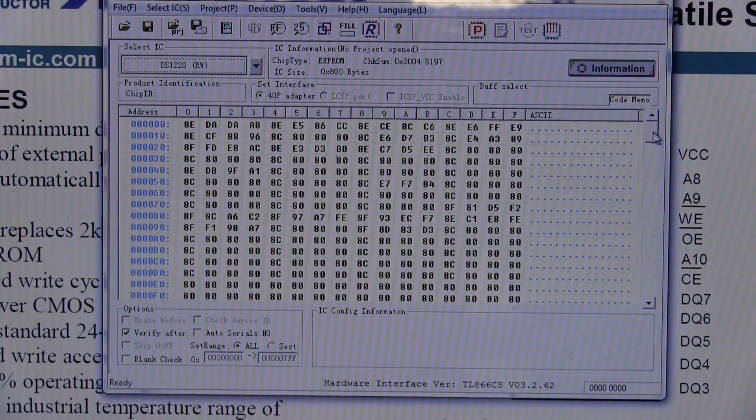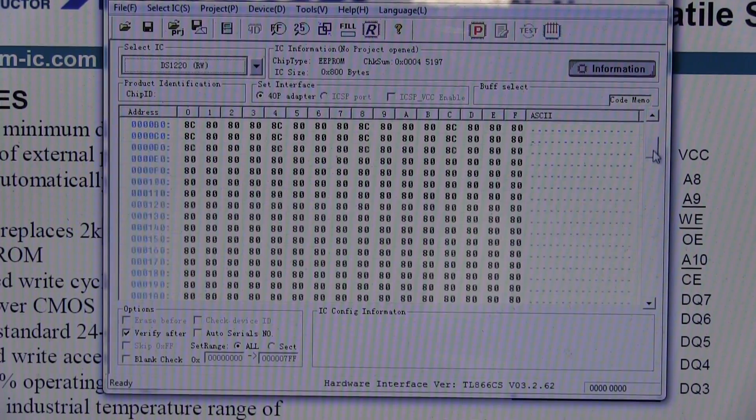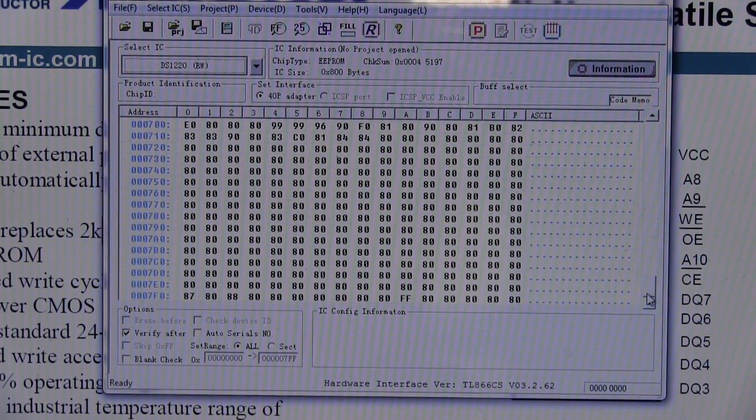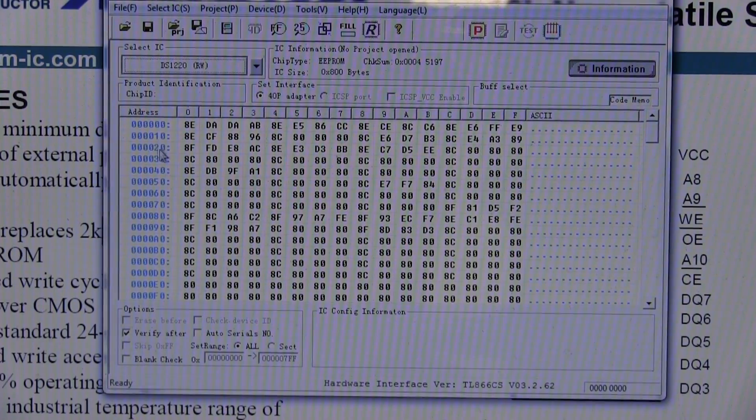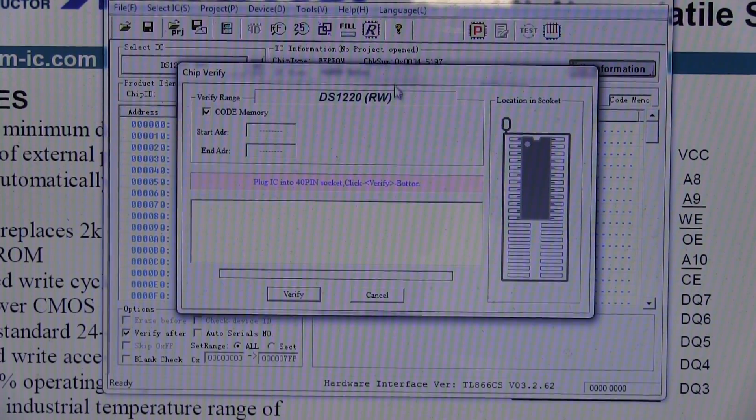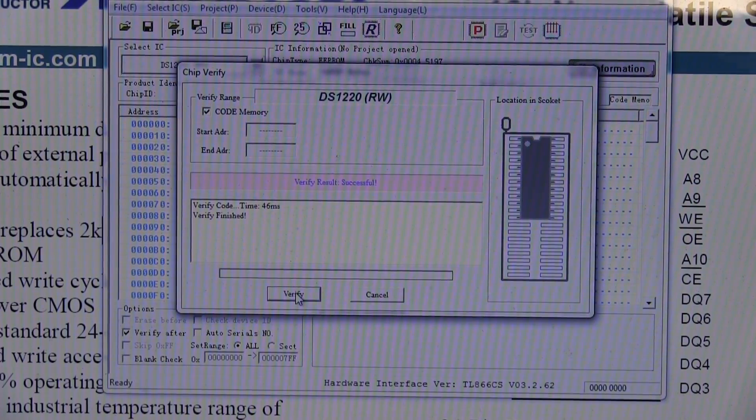And look, we have data! Woohoo, look at that. There's lots of 80s in there, but there is all this other data. Now just to make sure that's not just random gibberish, we want to go up and verify that. So it will compare what's in the chip to what it just read in. Verify successful, yes. And we can just run that a couple of times just to make sure everything's hunky dory. Let me actually physically take the chip out and put it back in and verify it again. Yep, so there you go, we have actually successfully read the contents and it is not empty.